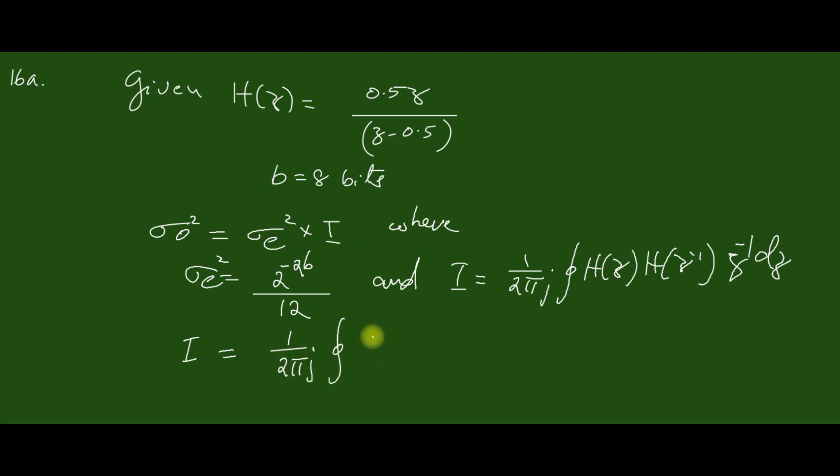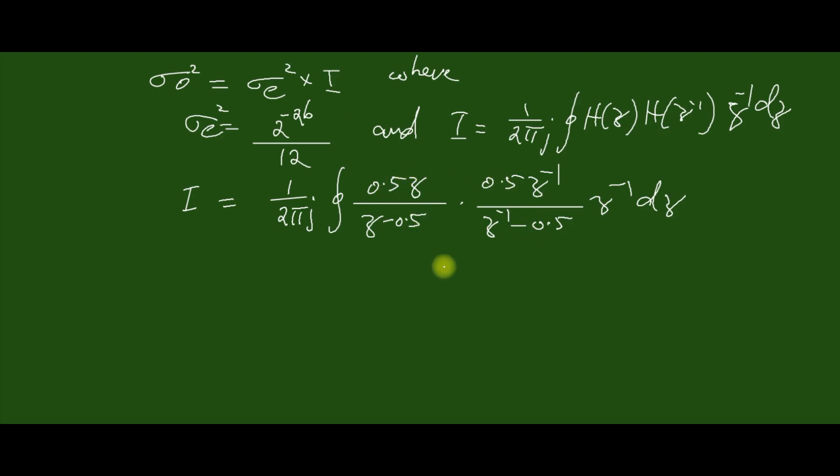So we can determine I = 1/(2πj) integral of H(z) which is 0.5z/(z-0.5) into 0.5z^-1/(z^-1-0.5) z^-1 dz. We can simplify this equation such that 1/(2πj).